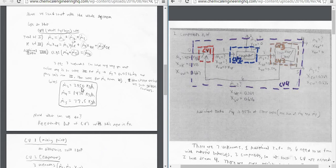So we can get M2, which is equal to 2,950 kilograms per hour, M4, which is equal to 1,470 kilograms per hour, and M5, which is equal to 77.5 kilograms per hour. So the question is now what we do. We can now reevaluate the degrees of freedom and see which control volume we want to attack next.